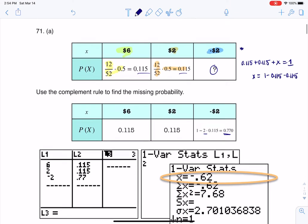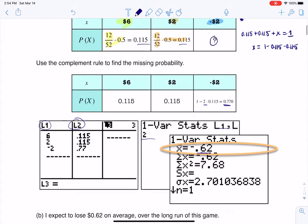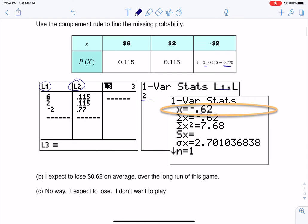I've got that figured out, and when it asks me to find the expected value, I put my variable into L1, my probabilities or my relative frequencies into L2, and we run one of our stats L1, L2, and there it is. I'm going to lose some money on average. So that's the expected value. And that also helps me with part B. So I expect to lose $0.62 on average, which really means 62 cents. So over the long haul, I'm going to lose 62 cents each time I play this game, which is not a good thing.